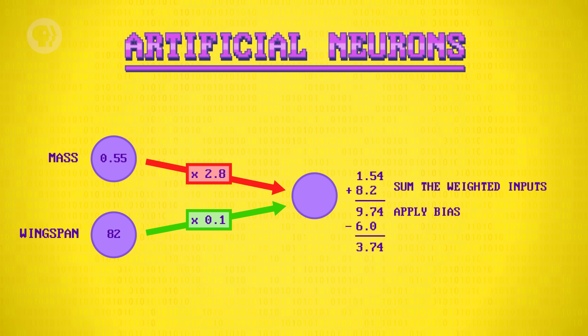Finally, neurons have an activation function, also called a transfer function, that gets applied to the output, performing a final mathematical modification to the result. For example, limiting the value to a range from negative 1 and positive 1, or setting any negative values to 0. We'll use a linear transfer function that passes the value through unchanged. So 3.74 stays as 3.74.